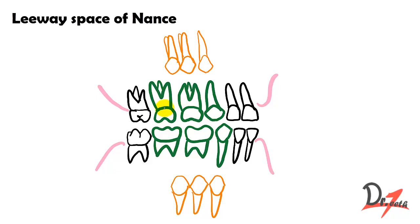This is called the second transitional period. When the deciduous canine and the deciduous molars are going to be replaced by the permanent canine and the premolars, that stage is called the second transitional period.